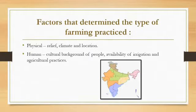Factors that determine the type of farming practiced. Under physical factors we have relief or topography, climate like temperature, rainfall, humidity, and location — where it is located and what type of soils are present in that region for cultivation. Under human factors, the cultural background of people influences the cultivation of crops or domestication of animals. Chief among them are religion, social organization, food choices, and medical treatment practices.